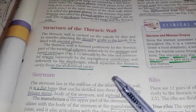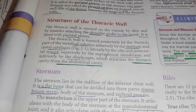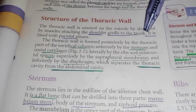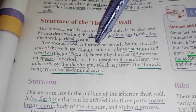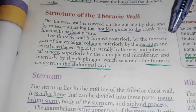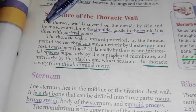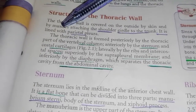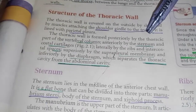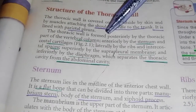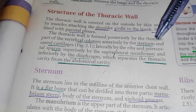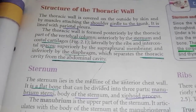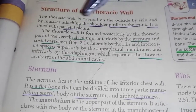You should remember how the thoracic wall is formed. Basically, the thoracic wall is formed posteriorly by the thoracic part of the vertebral column, anteriorly by the sternum and costal cartilages, and laterally by the ribs and intercostal spaces.